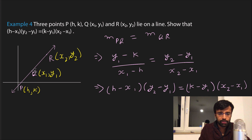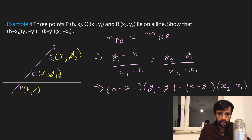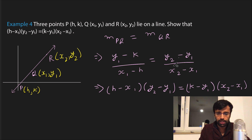The slope of PQ should equal the slope of QR. So: slope of PQ = (Y1 − K) / (X1 − H), and this should equal slope of QR = (Y2 − Y1) / (X2 − X1).